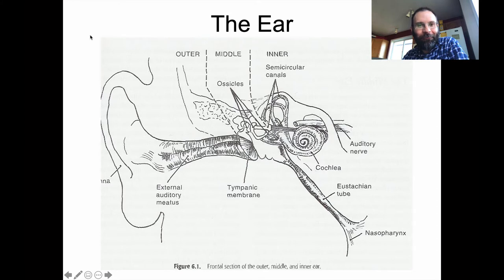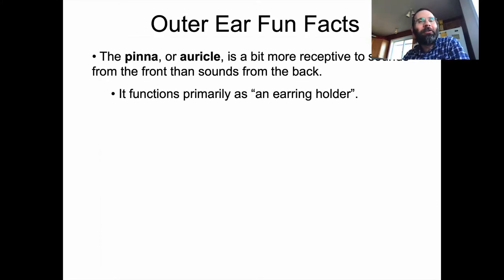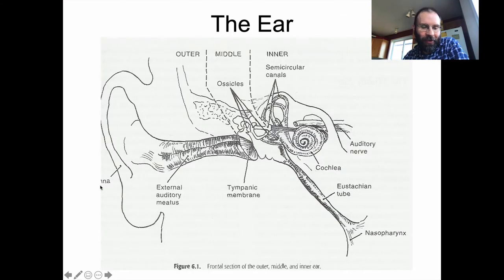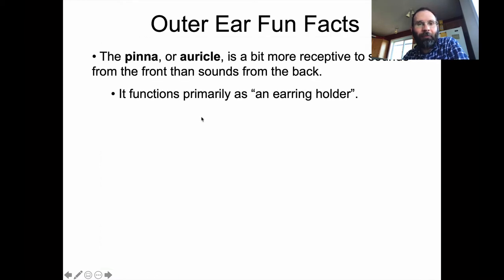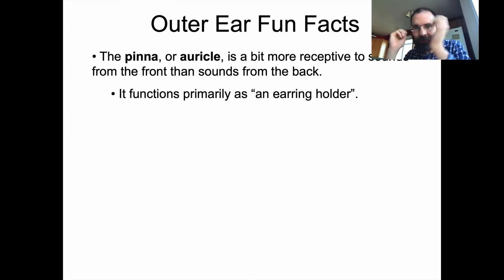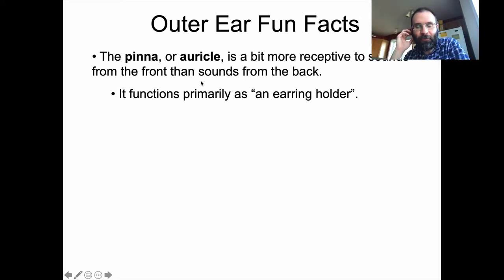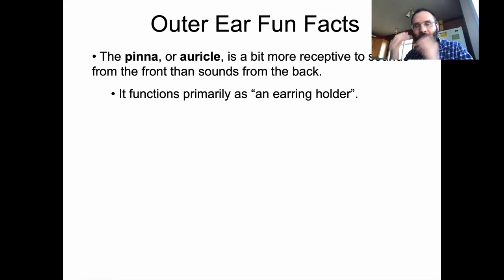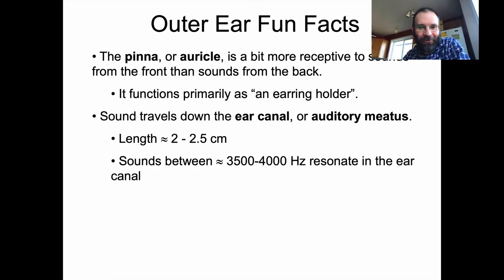The outer ear structure is technically known as the pinna or auricle. It's what we normally think of as just the ear, but it's actually not that functional for hearing. It's a bit more receptive to sounds from the front of your body than from the back — it has a kind of shell-shaped indentation that might catch sound waves a little better from the front. But as it says here, it functions primarily as an earring holder.